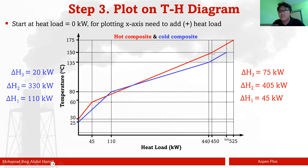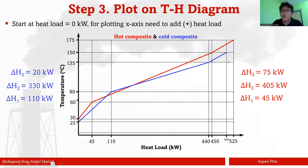The last segment of the hot composite curve covers 150 to 170°C with heat load 75 kW. Adding 450 + 75 = 525, so the final point is (525, 170). You then do the same thing for the cold composite curve, drawing three segments, but with different values corresponding to the cold stream intervals.